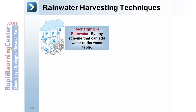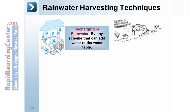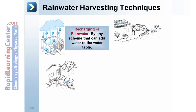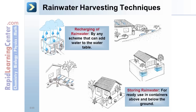A home can act as a catchment by funneling water off roofs and driveways into catchment areas. Rainwater may also be caught by funneling it off walkways into catchment areas, and by storing rainwater for ready use in containers above and below the ground.